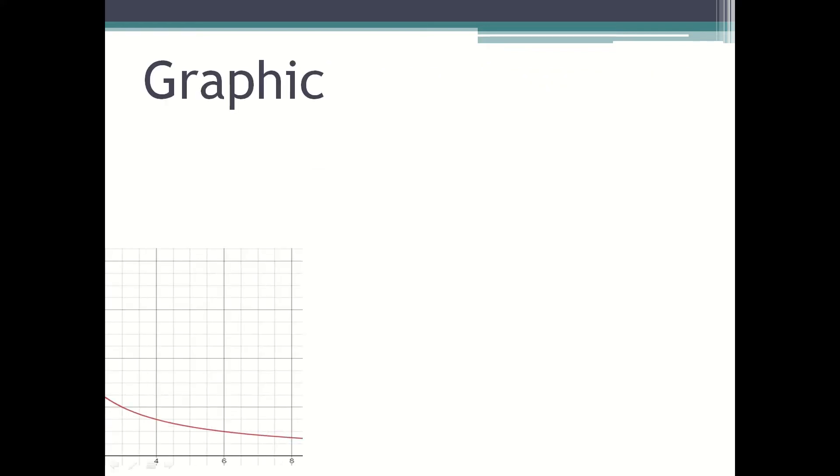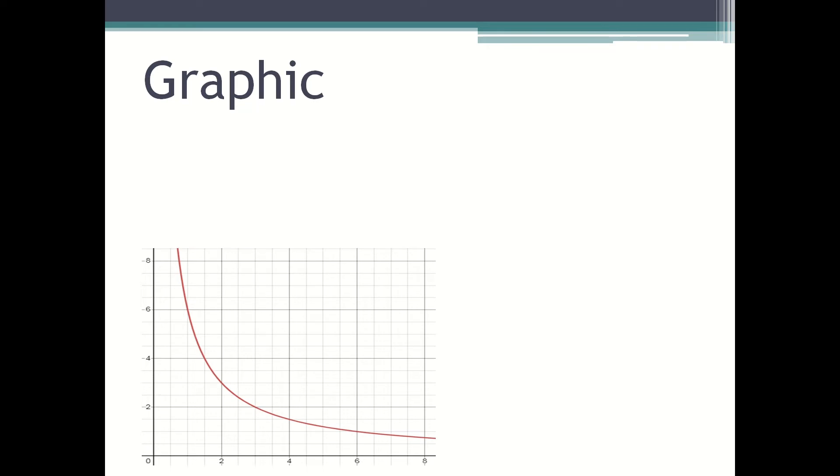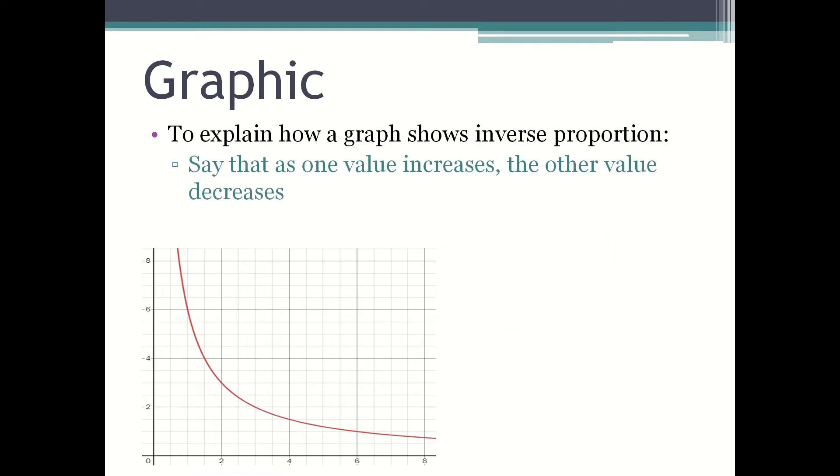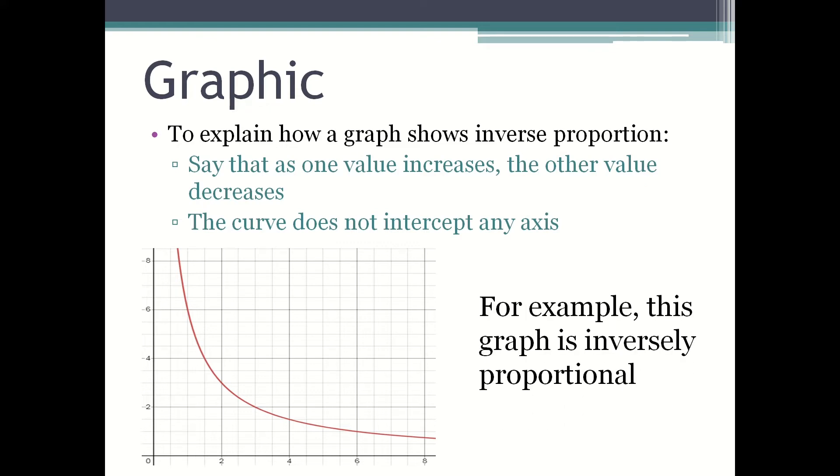Graphic. Here's a graph that shows inverse proportion. To explain how a graph shows inverse proportion, you would have to say as one value increases the other decreases, the curve doesn't intercept any axis. For example, this graph as I said before is inversely proportional.